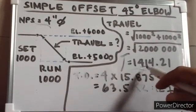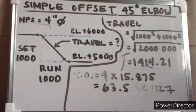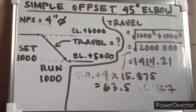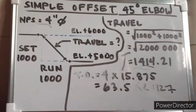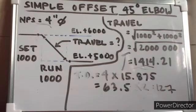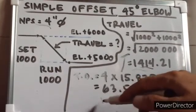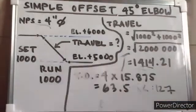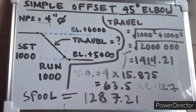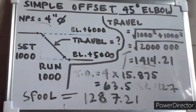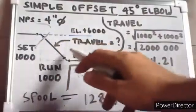Now, from the travel measurement, we are going to subtract 127. Our spool will be 1,287.21 — that is the cut length from this joint to this joint.